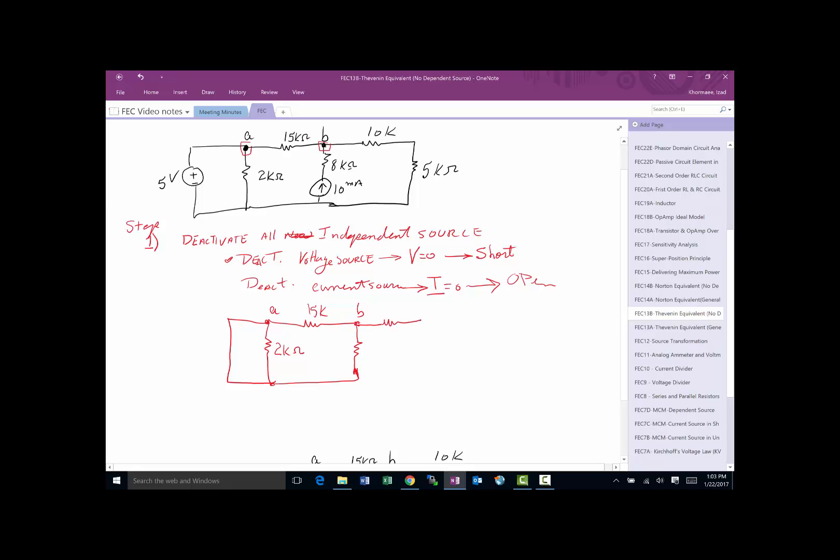Okay. And then, 10K. And, I'm sorry, this current source has to be an open, right? When you deactivate the current source, it has to be an open. So this will be an open here. The voltage source was a short. And then, we got a 5K. So now, this is my new circuit.